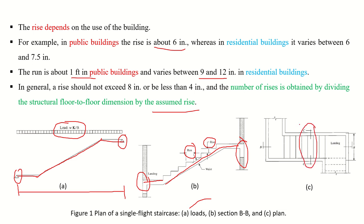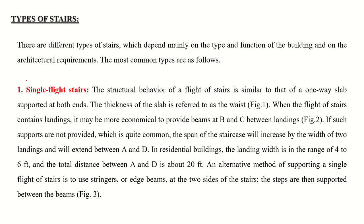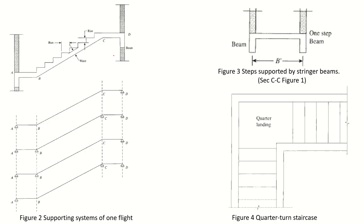There are different types of stairs. The most simple is a single flight stair — you can see examples where beams are provided at the ends of the landings. The supporting system can vary: in the simplest case, supports are only at the ends and the span runs from A to D. Alternatively, beams can be provided at points B and C, reducing the span to B–C and reducing bending moment and shear force requirements.